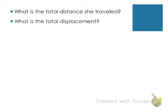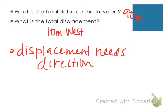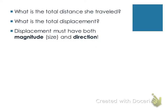The difference is that displacement needs a direction. Total displacement was 10 meters west; total distance was 90 meters. Displacement must have both magnitude and direction — the 10 meters is the magnitude, west is the direction. Distance does not need a direction. Displacement needs a direction; distance does not.